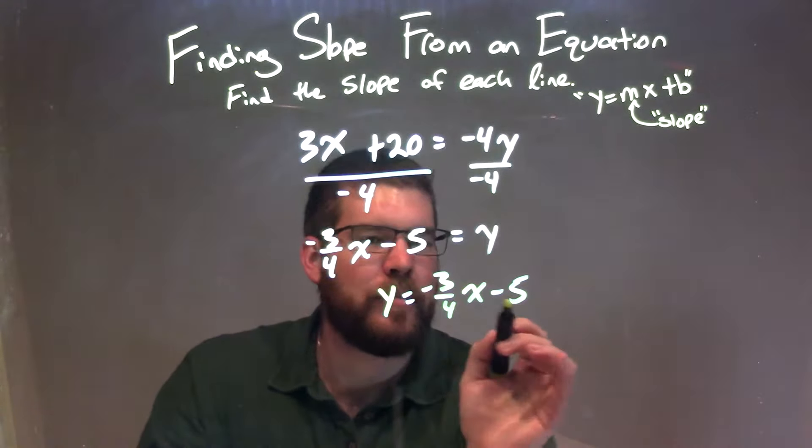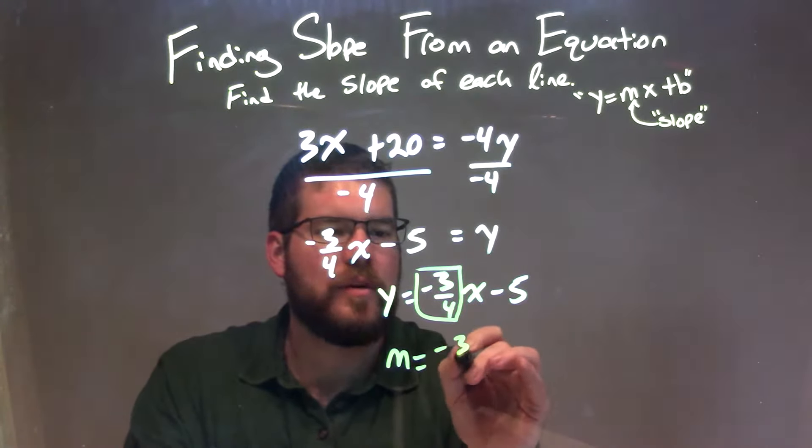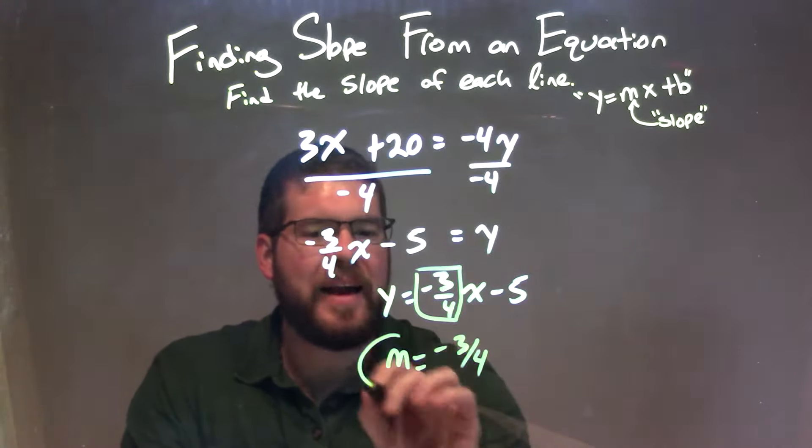y equals mx plus b. m is isolated as a coefficient for x. So we have m equals negative 3 fourths right there. And that is our final answer.